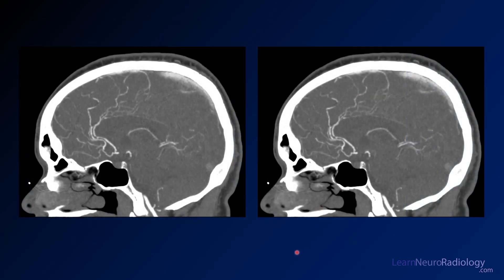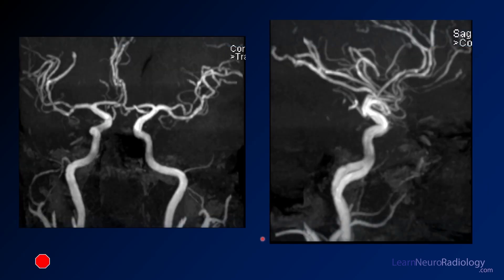Looking at the ACAs on sagittal MIPs through the midline, you see the anterior cerebral arteries along the interhemispheric fissure, and these vessels are not normal. Vessels should have a smooth caliber and taper gradually distally. You shouldn't see areas where the vessel gets smaller and then bigger distally — that's very unusual for intracranial vessels. On projectional images, the ACAs look almost like sausages on a string or beads on a string, and the MCAs in the Sylvian fissure are markedly abnormal as well.